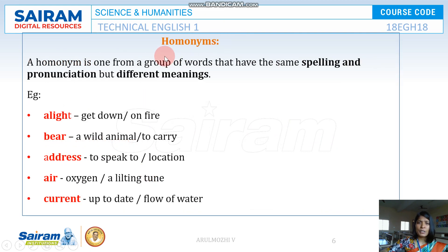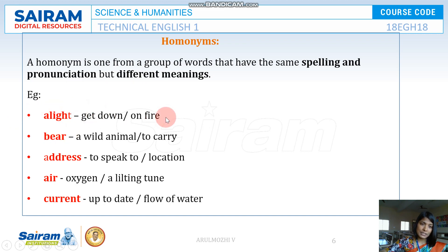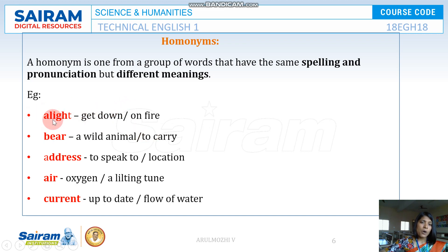Now let's look at homonyms. A homonym is a word that has the same spelling and same pronunciation but different meaning. For example, ALIGHT: 'alight the bus' means to get down from the bus, while 'the entire house is alight' means the house is on fire.